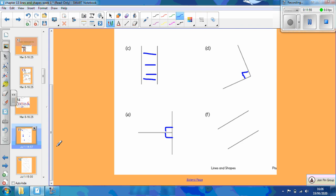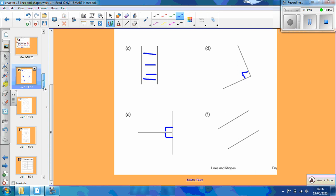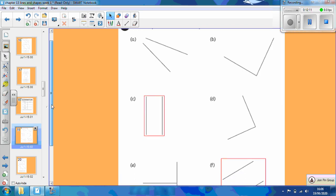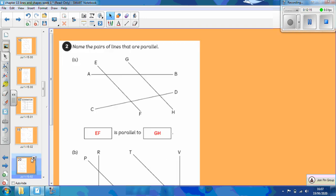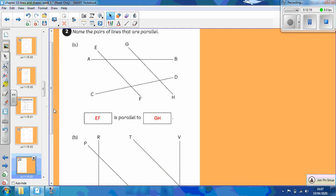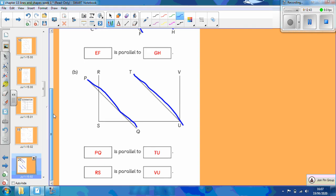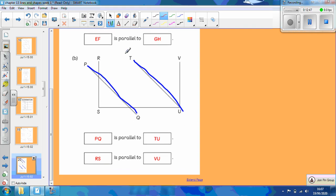Now have a go at the next few worksheets independently and I'll see you in a minute to have a go at looking through your answers. So we've done this one already together. C and F are parallel lines. Now, number 2, name the pairs of lines that are parallel. So we've got EF here, this line EF and GH are parallel lines. They will never meet. EF is parallel to GH. And another drawing here. PQ, where's that one? PQ is this one, is parallel to TU. These lines will never meet. And the line RS here is parallel to the line VE.